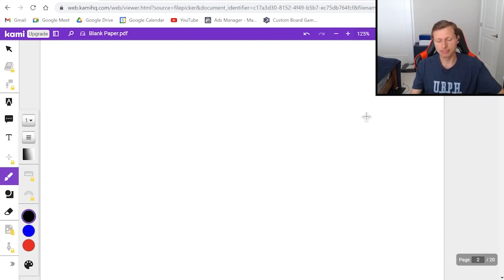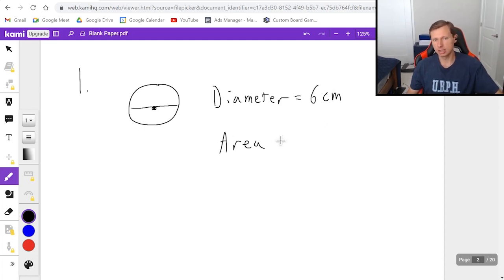So let's look at some examples now. The first one, let's say I have a circle, and it has a diameter of 6 centimeters. And I would like to know what the area and circumference is. And so to find that, all I need to do is use the formulas. So first, if my diameter is 6, that means the radius is 6 over 2, which is 3.